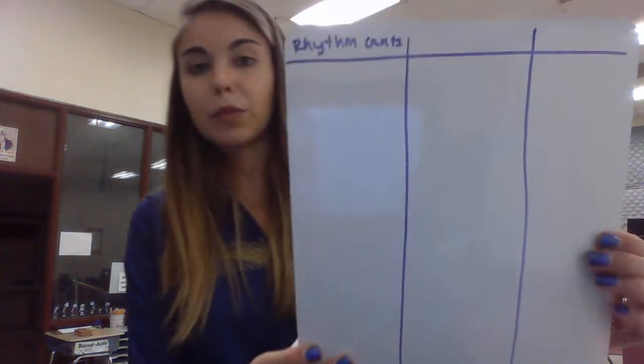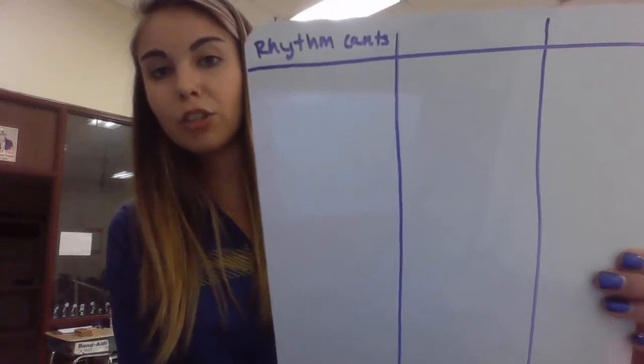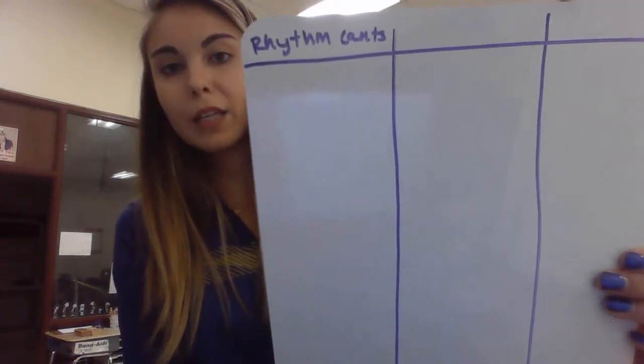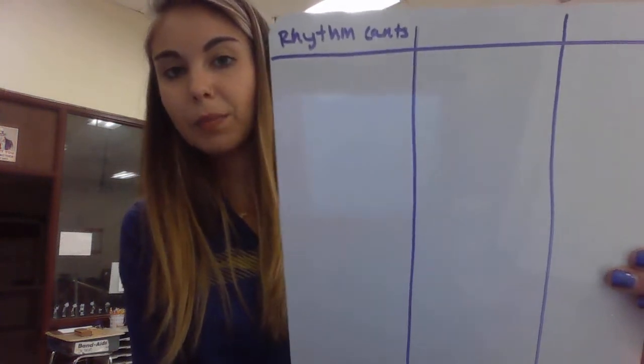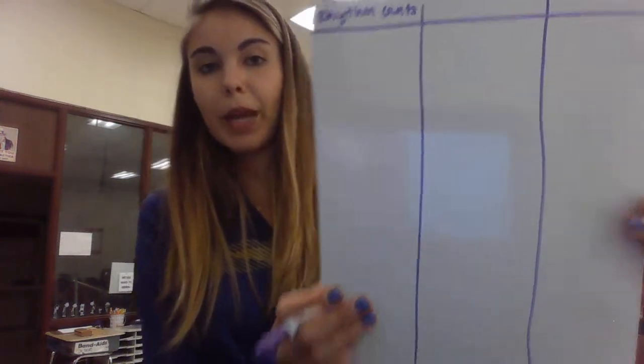You're drawing those three sections with a line at the top to title. So the first one is going to be the actual rhythm and the counts. We're going to write 'Rhythm Counts' at the top of the first column. Make sure you're spelling rhythm correctly — R-H-Y-T-H-M. Rhythm counts.